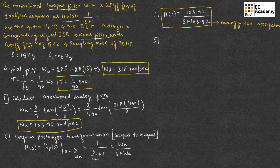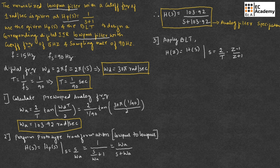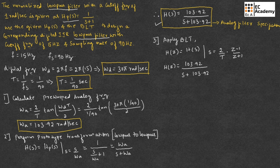The third step is to apply the bilinear transformation. We replace S in H(S) with (2/T) * (Z - 1)/(Z + 1). Substituting the H(S) we obtained, which is 103.92 / (S + 103.92), we replace S with 180 * (Z - 1)/(Z + 1), since 2/T equals 2 divided by 1/90 which equals 180.